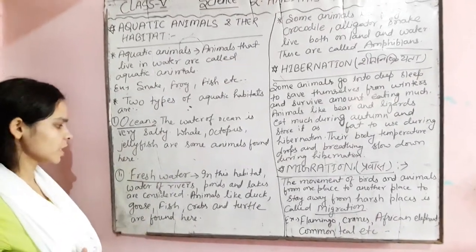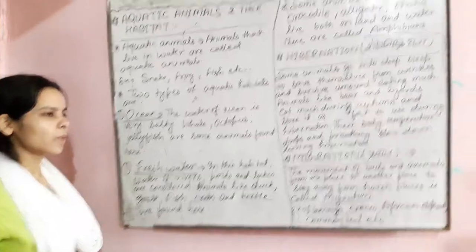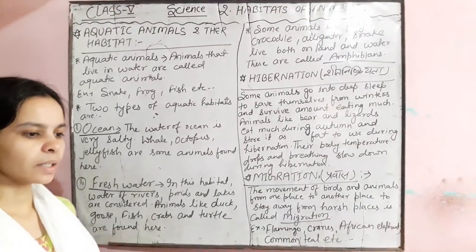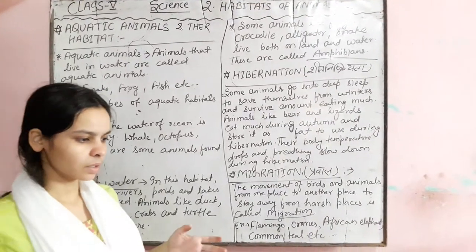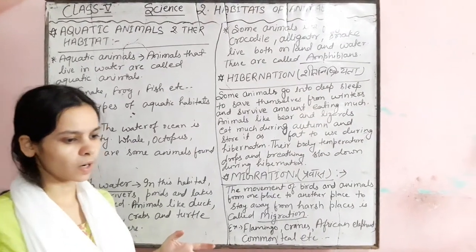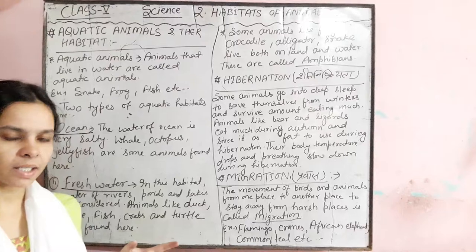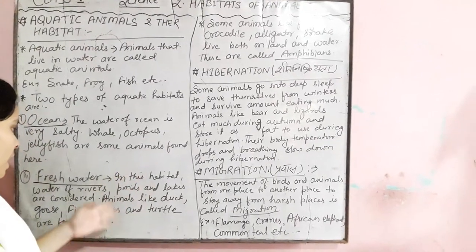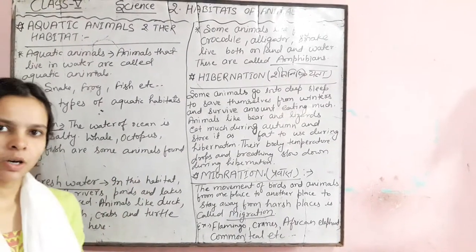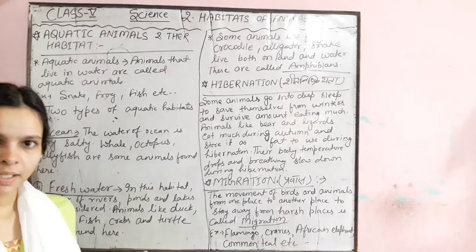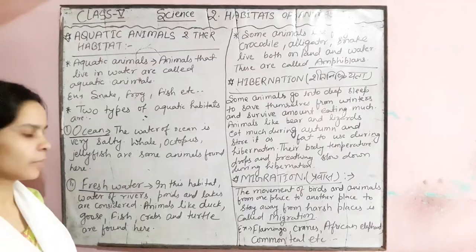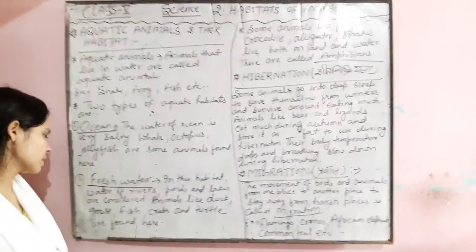Fresh water is a source of water which is not salty, such as lakes and ponds. These are examples of fresh water habitats.